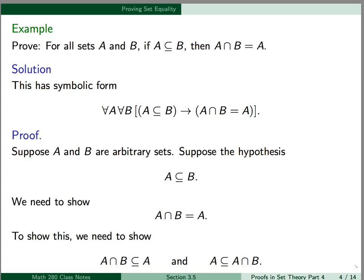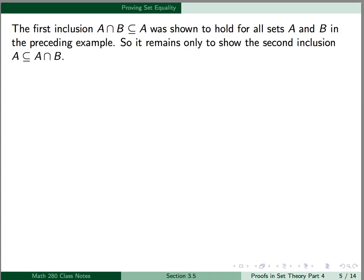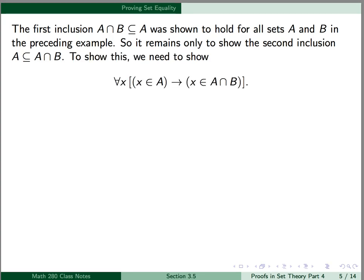If we apply the theorem to show this equality, we need to show that A intersect B is a subset of A, and A is a subset of A intersect B. The first inclusion, A intersect B is a subset of A, was shown to hold for all sets A and B in an earlier example. So it remains only to show that the second inclusion, A is a subset of A intersect B, holds. To show this, using the definition of a subset, we need to show: for all x, x is an element of A implies x is an element of A intersect B.